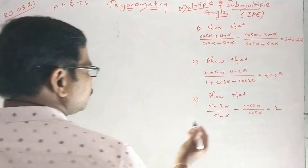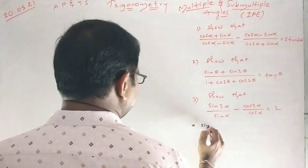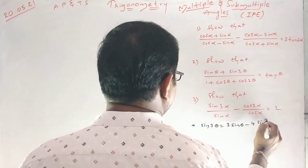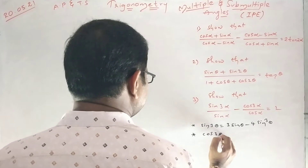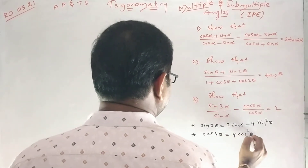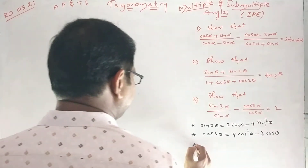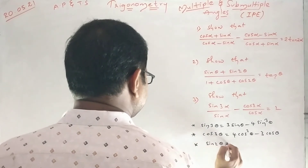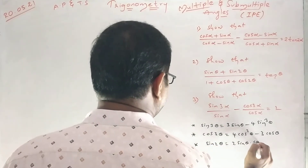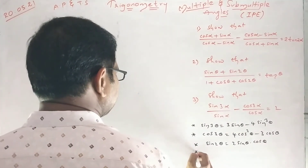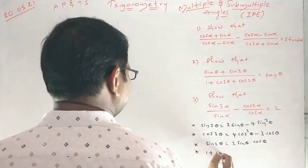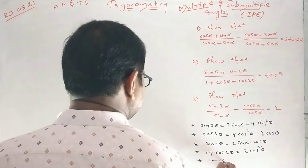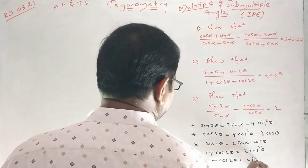Here we are going to use the sin3θ formula again: 3sinθ − 4sin³θ. cos3θ means 4cos³θ − 3cosθ. And sin2θ means 2sinθcosθ, and wherever we get 1 + cos2θ, that equals 2cos²θ, and 1 − cos2θ means 2sin²θ.